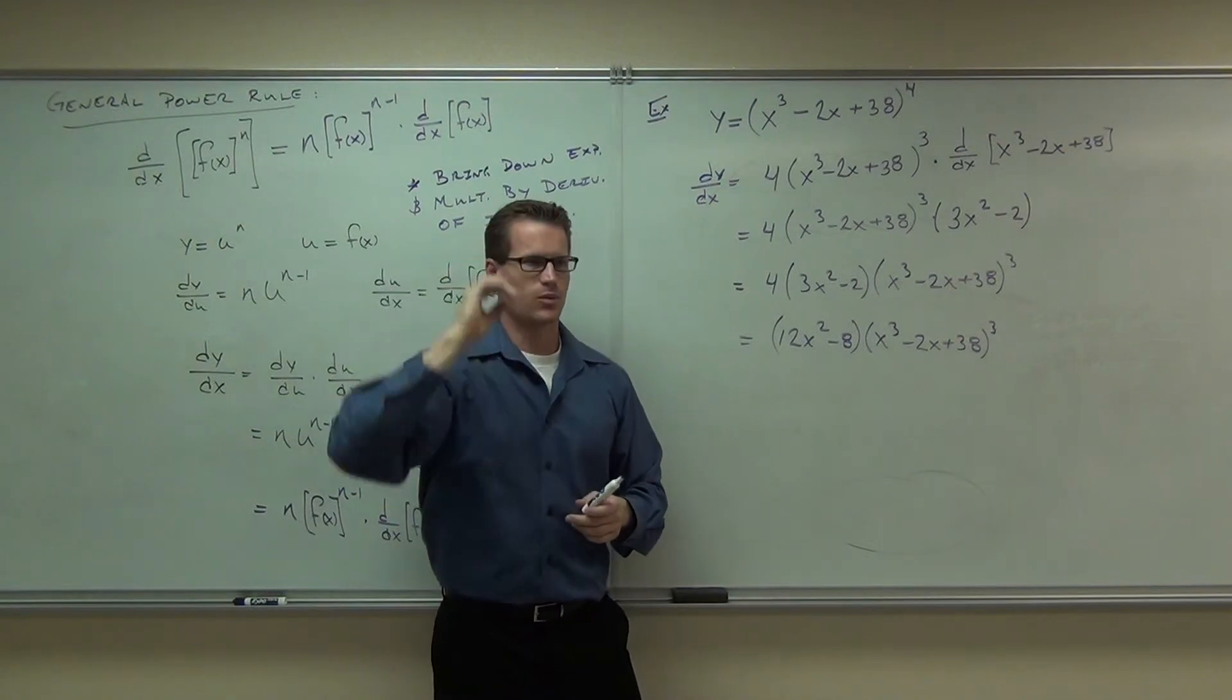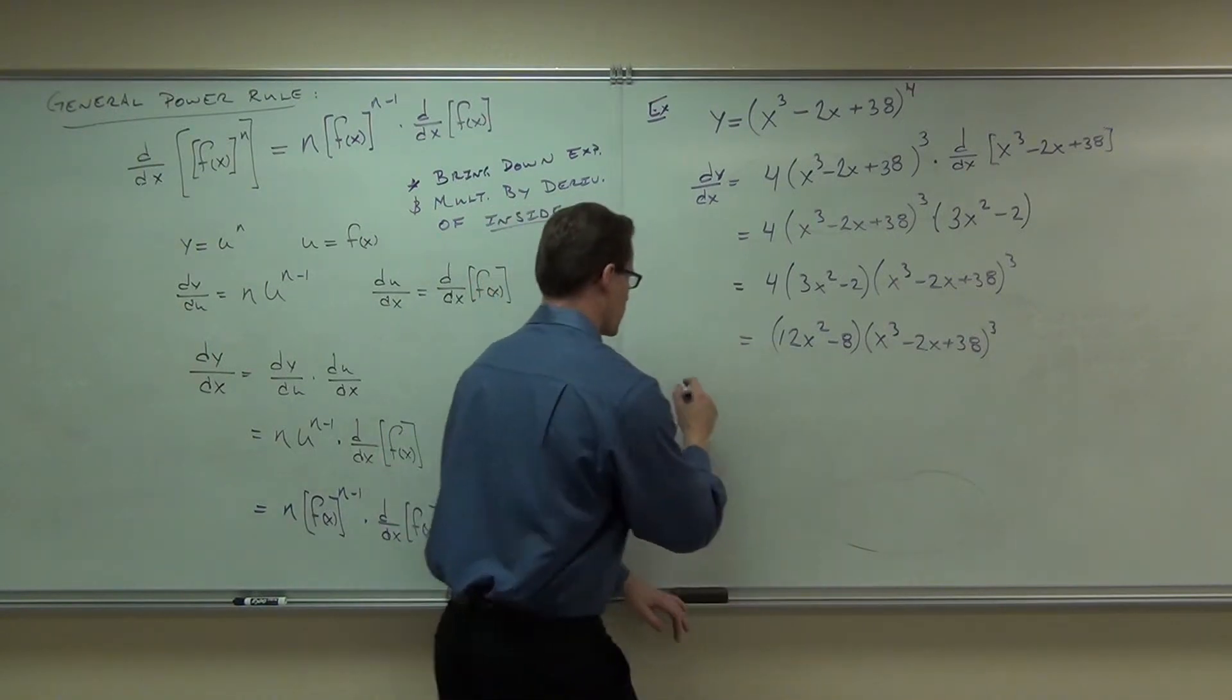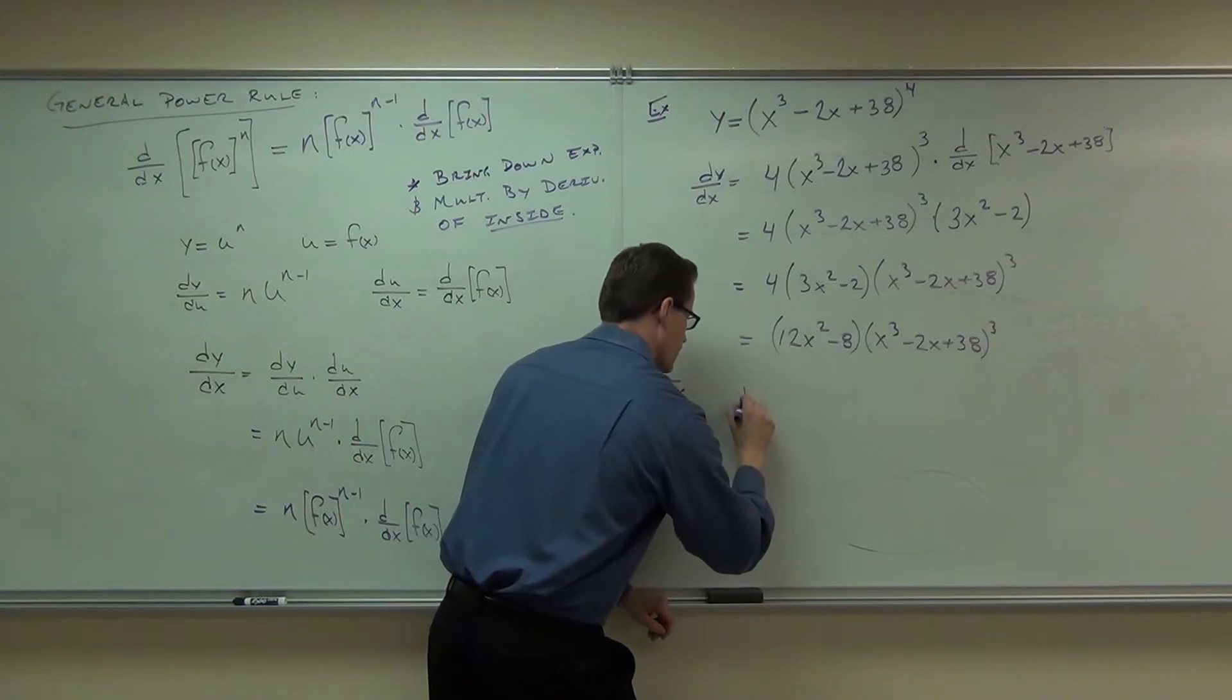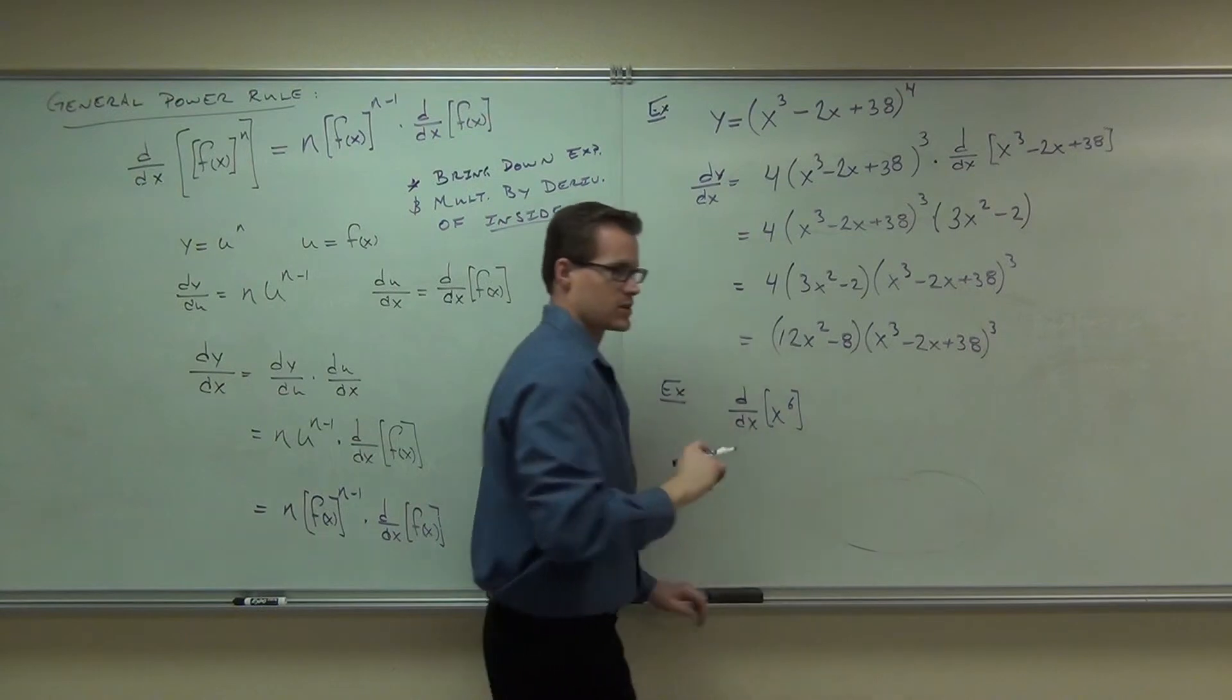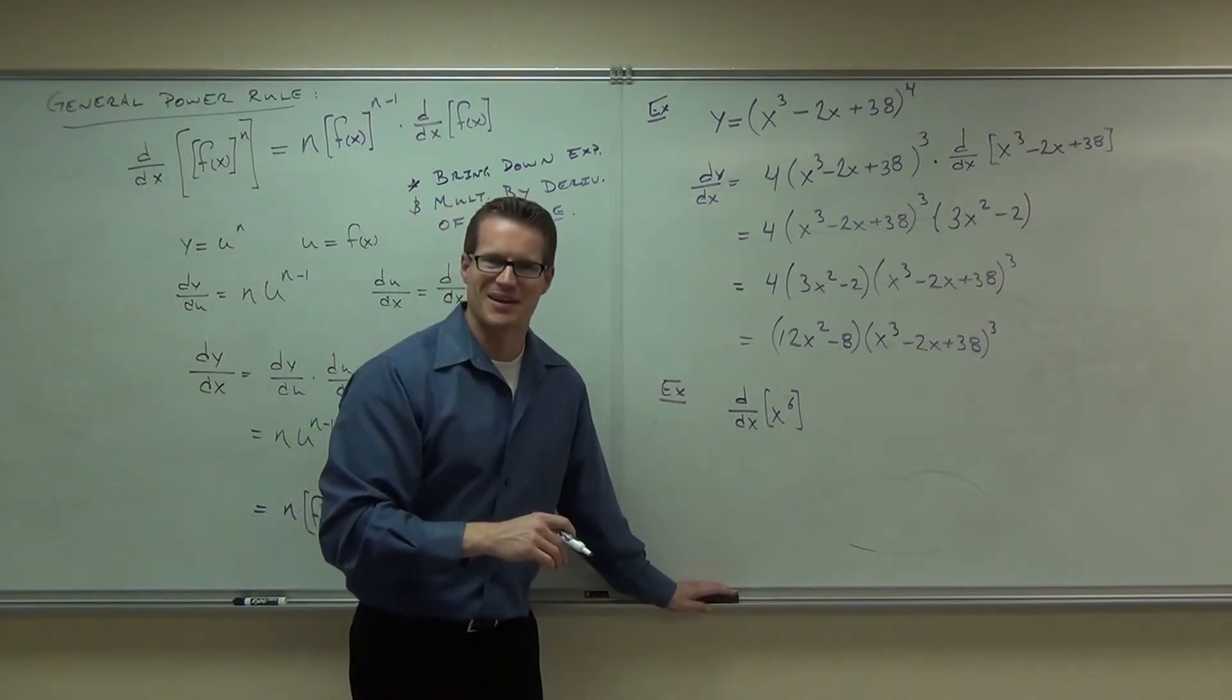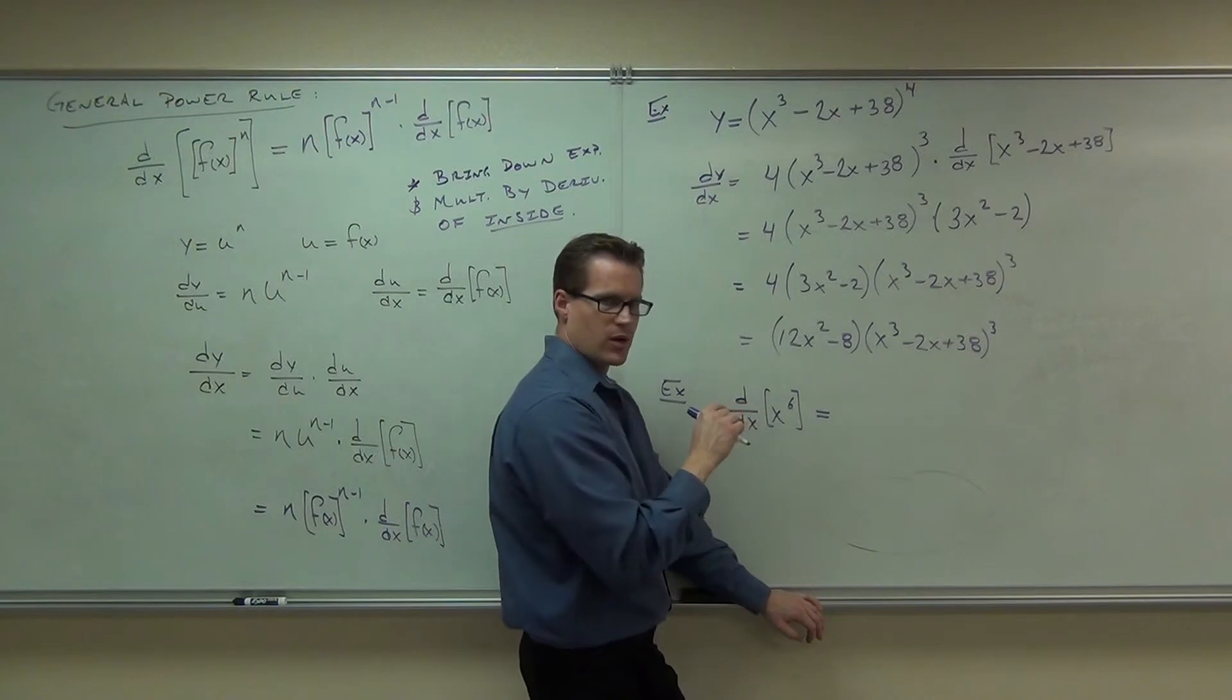Are you ready to see that we've been doing this literally the entire time with our power rule? See, the general means encompasses all, right? So check this out. If I give you x to the sixth, just a simple example. And I say, why don't you take the derivative of x to the sixth. You know inherently that that is 6x to the fifth, right? Okay. That actually wasn't inherent, I guess, because I taught it to you. But you know it, nonetheless.